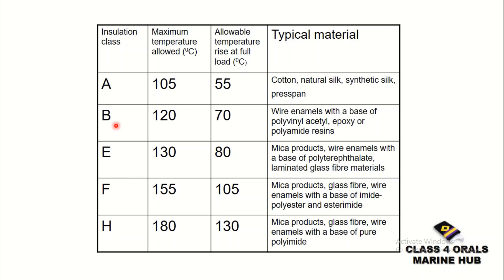Next comes Class B insulation. The maximum temperature allowed is 120 degrees centigrade, with a full load allowable temperature rise of 70 degrees centigrade. The material for this class is wire enamels with a base of polyvinyl, acetyl, epoxy, or polyamide resins.